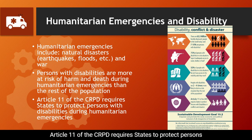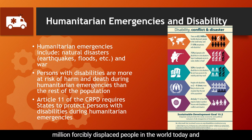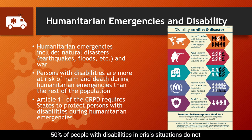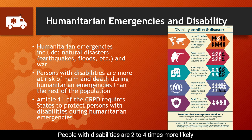Article 11 of the CRPD requires states to protect persons with disabilities during humanitarian emergencies. There is a graphic on the right side of the slide entitled 'Disability, Conflict and Disaster.' The text reads: there are 65.3 million forcibly displaced people in the world today and 7-10% are persons with disabilities. 75% of persons with disabilities in crisis situations report inadequate access to water, shelter, or food. 50% of people with disabilities in crisis situations do not have access to the mobility aids they need. People with disabilities are two to four times more likely to die in a crisis situation than the rest of the population.